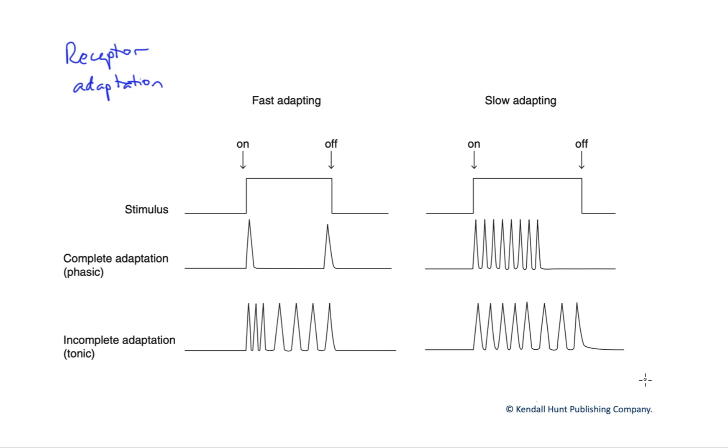One is where we, during the presence of a continual stimulus, so our stimulus comes on here and goes off over here, in complete adaptation, we get a stimulus response in the receptor and it ceases, even though the stimulus continues.